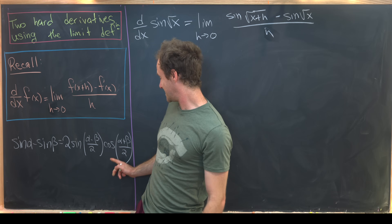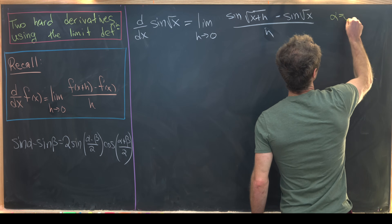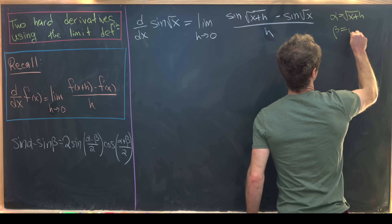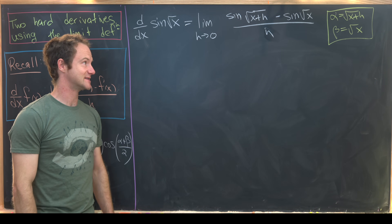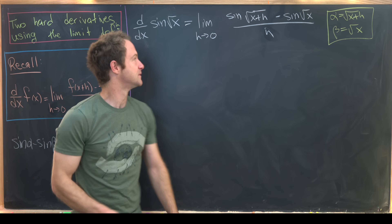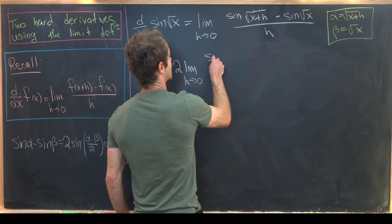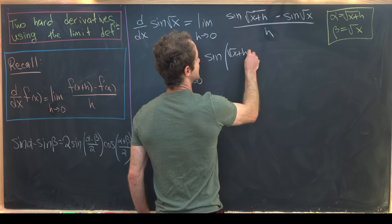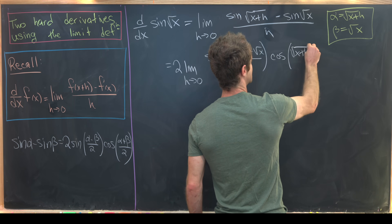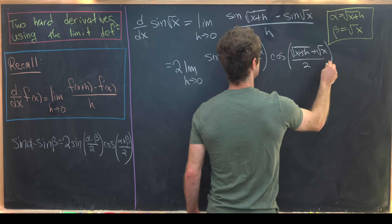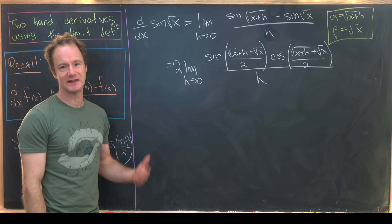We apply this formula with α = √(x+h) and β = √x. That transforms the numerator inside our limit using the identity, giving us 2 times the limit as h goes to zero of sin((√(x+h) - √x)/2) · cos((√(x+h) + √x)/2), all over h. The factor of two can be pulled out because the limit is a linear operation.